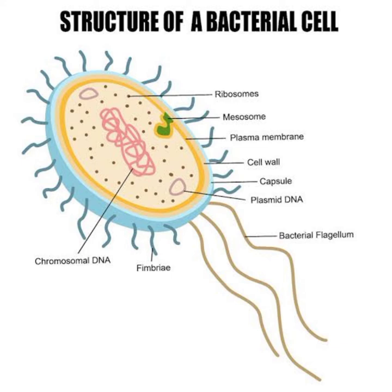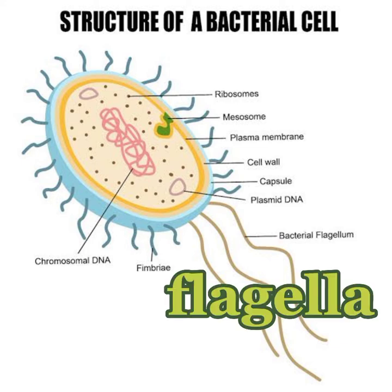Flagella are hair-like, tail-like structures. They can be present all over the surface of bacteria, or on one end or both ends. They help bacteria in swimming. These flagella move in a propeller-like motion and help bacteria move towards nutrients or away from chemicals.